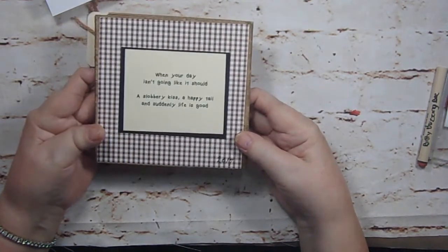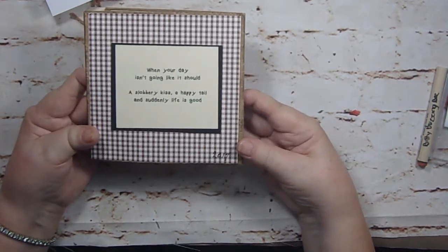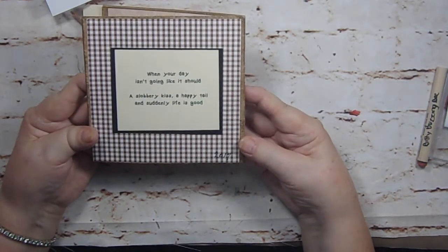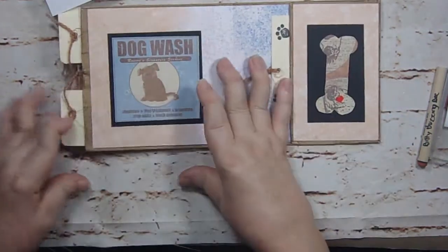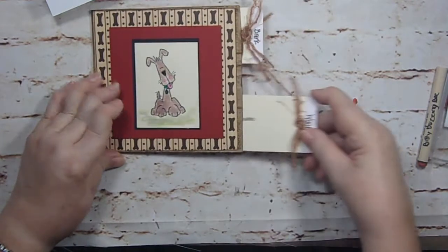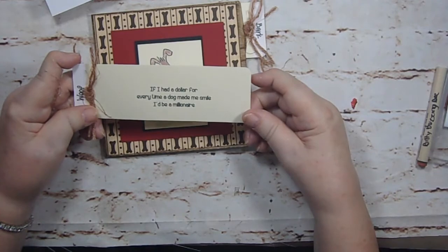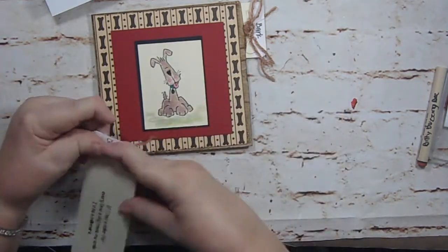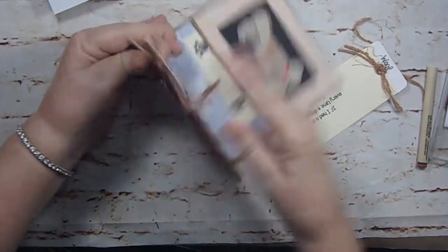And then it says, when your day isn't going like it should, a slobbery kiss, a happy tail, and suddenly life is good. So sweet. And then the dog wash, and then in the front, it has two more pull out tabs. This one says, if I had a dollar for every time a dog made me smile, I'd be a millionaire. Isn't that the truth? And then it slides back into the side.